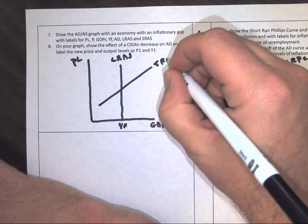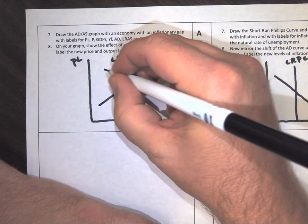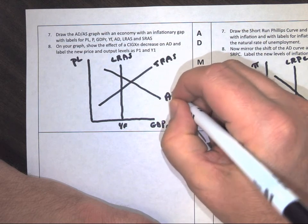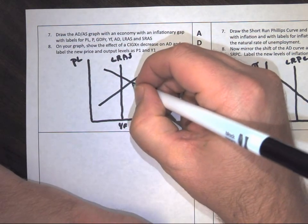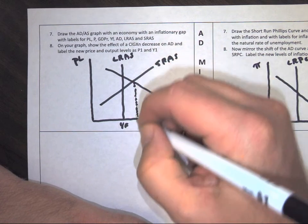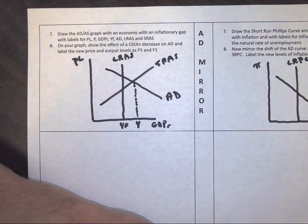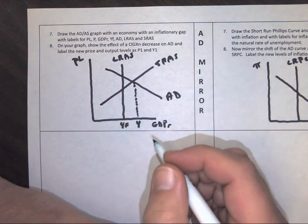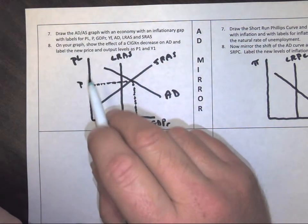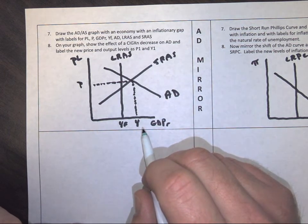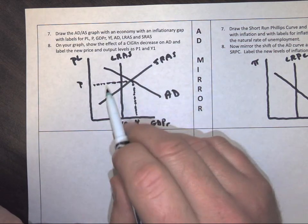So now I'm going to have short-run supply and aggregate demand crossing to the right. So our GDP, or real output, is actually going to be beyond full employment output. Now I've got my current price level, I've got my current output level or GDP, I've got all my labels on here.